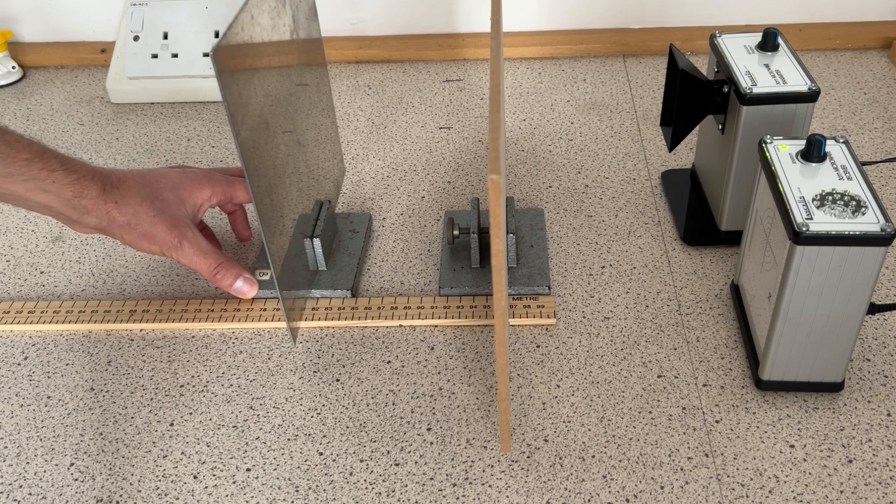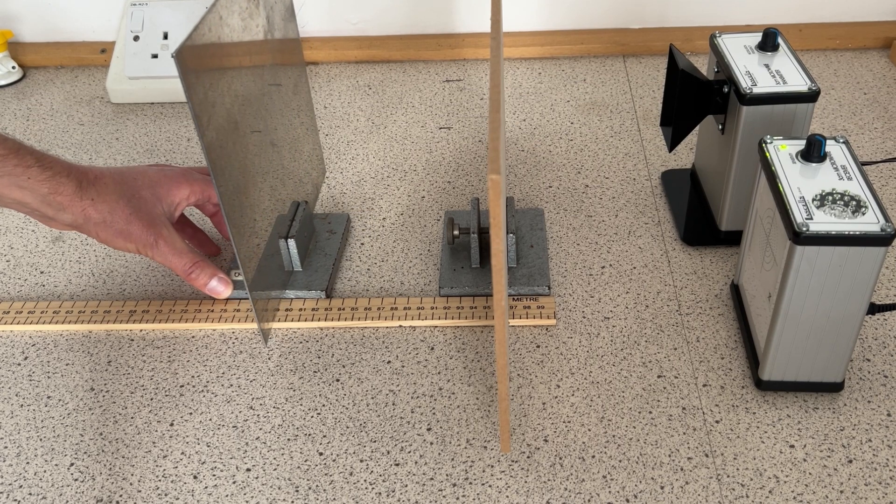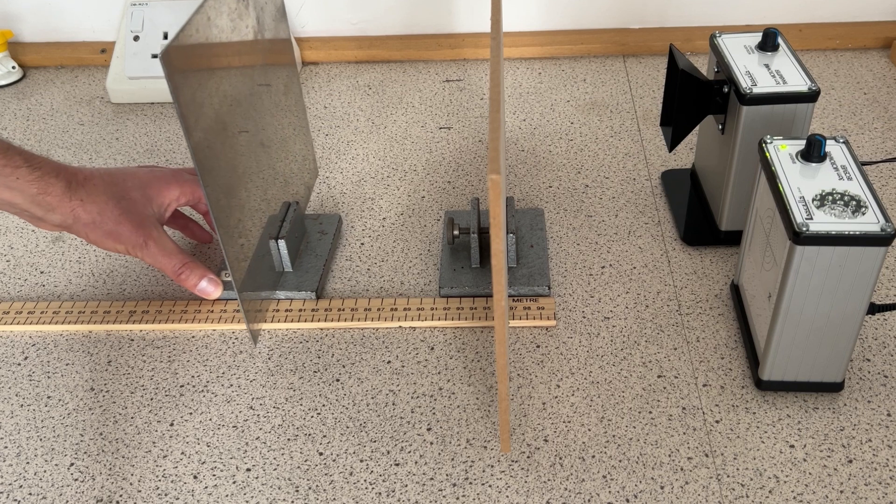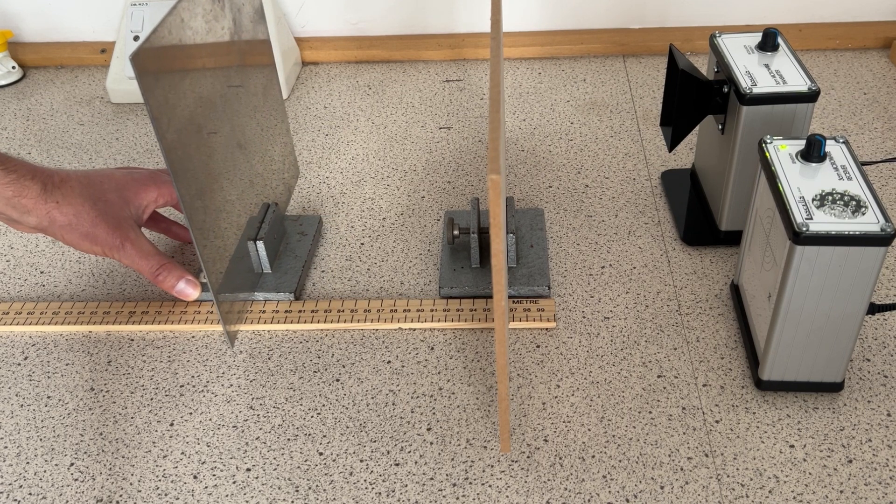If we measure the distance between the positions of the metal sheet where we get constructive interference and then when we get constructive interference again, we ought to be able to work out the wavelength of the microwaves.